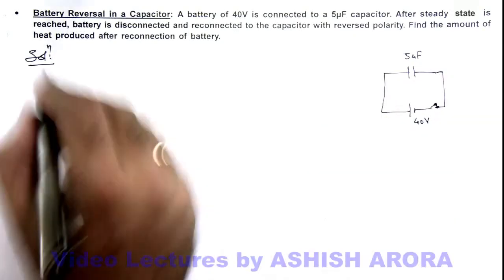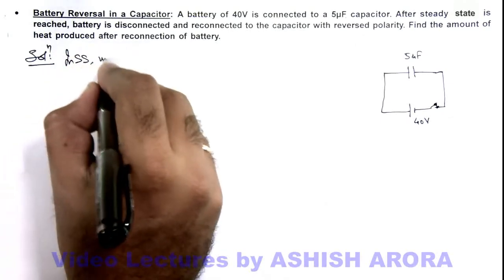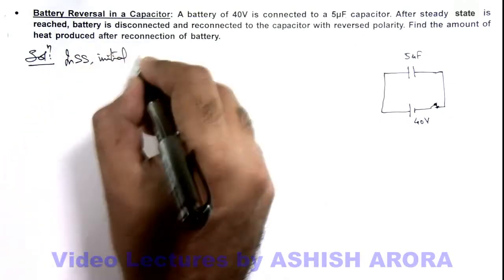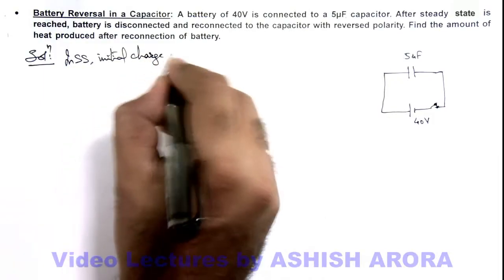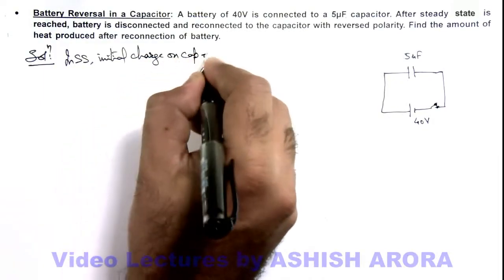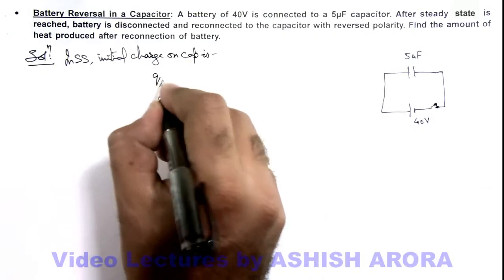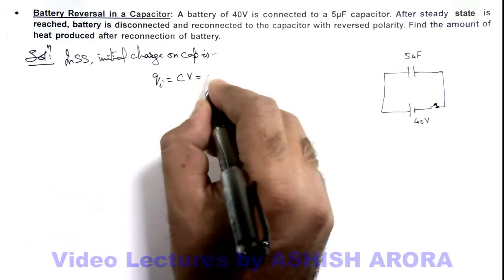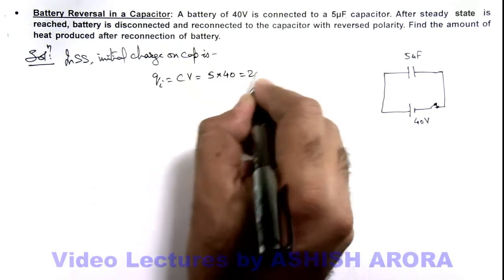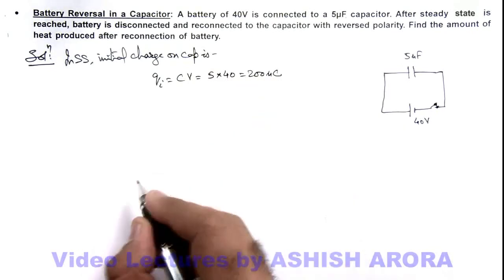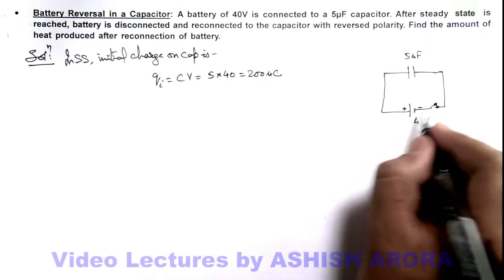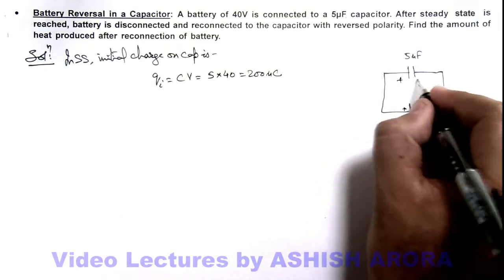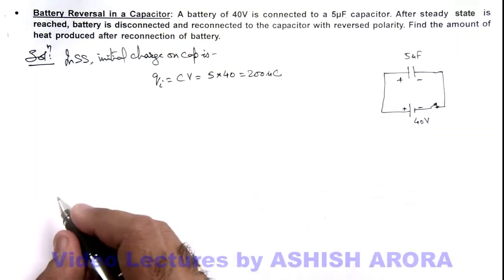Now in this situation we can write in steady state, initial charge on capacitor is Q initial equals CV, that is 5 multiplied by 40, this will be 200 microcoulomb. Obviously, on the side where potential is high it'll be positive polarity and on the other side it is negative polarity.